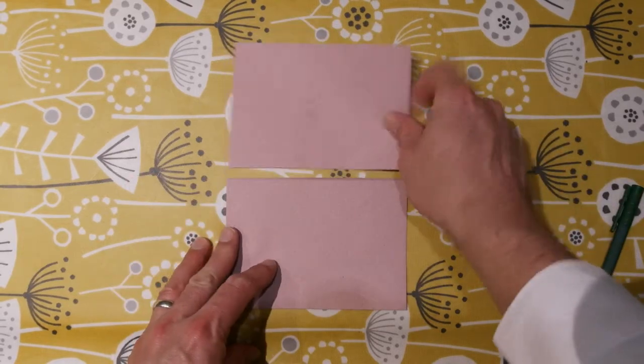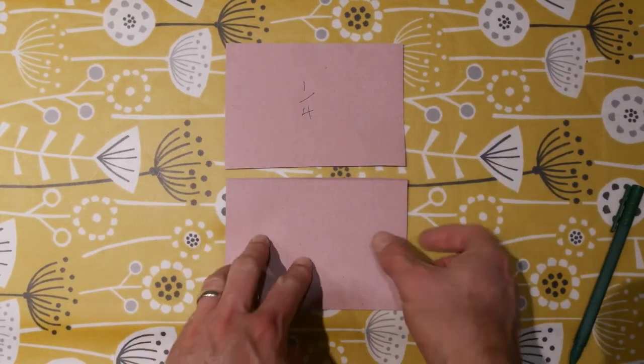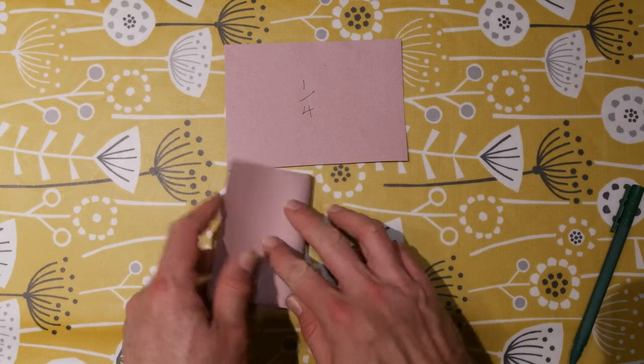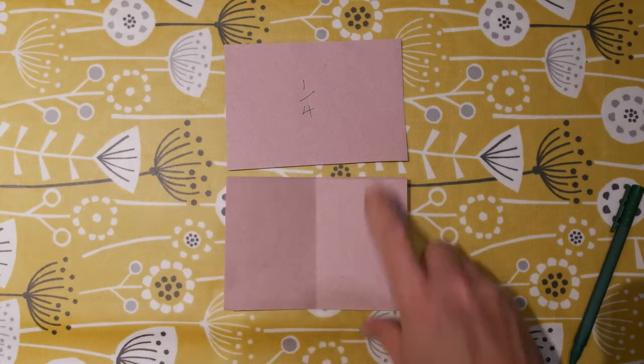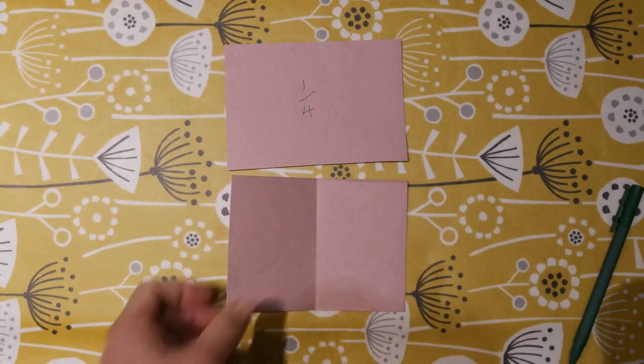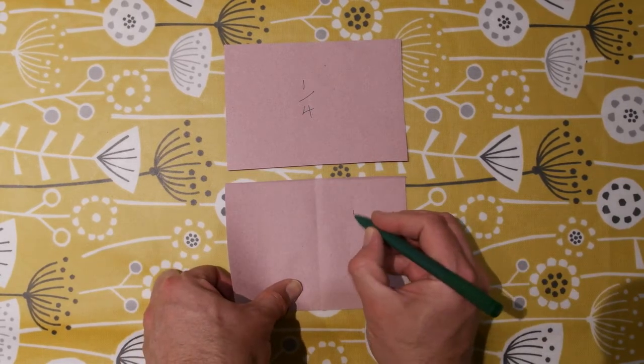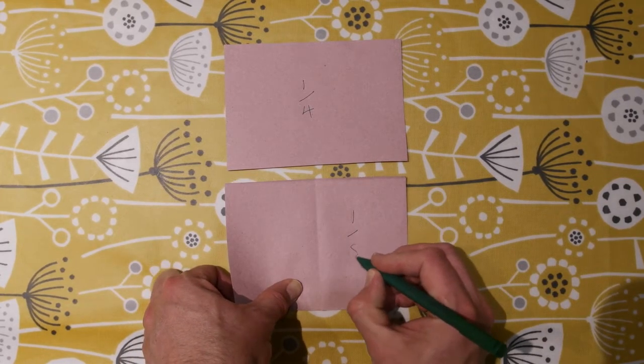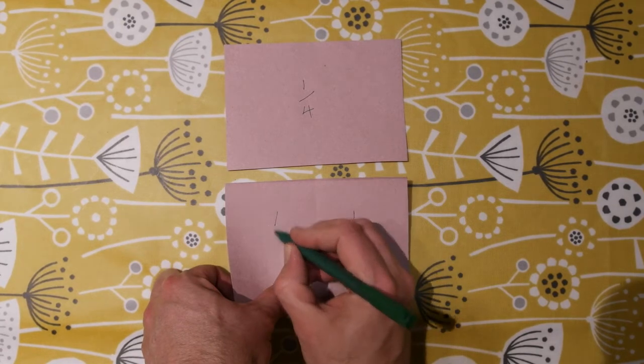And now, if that's a quarter, and we fold this one, that must be half of a quarter, so it must be one eighth, and we'll do this one as one eighth as well.